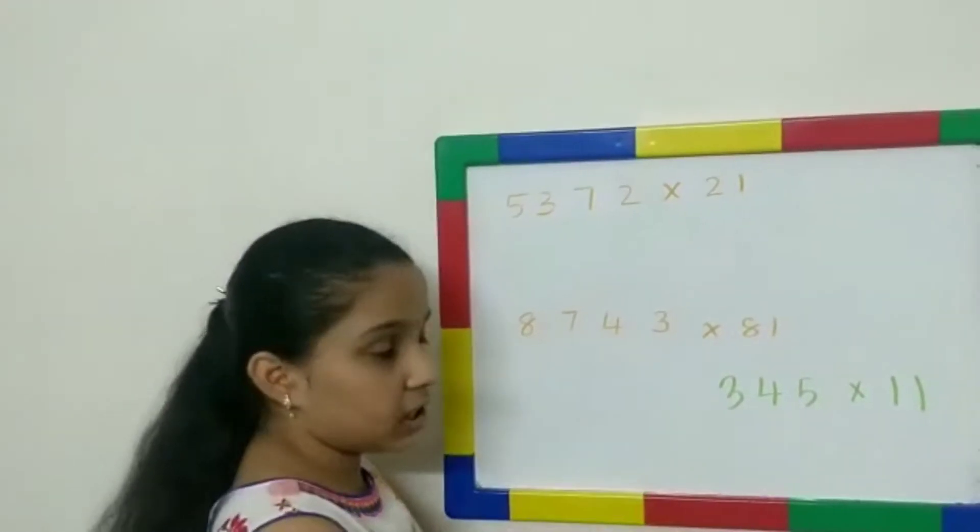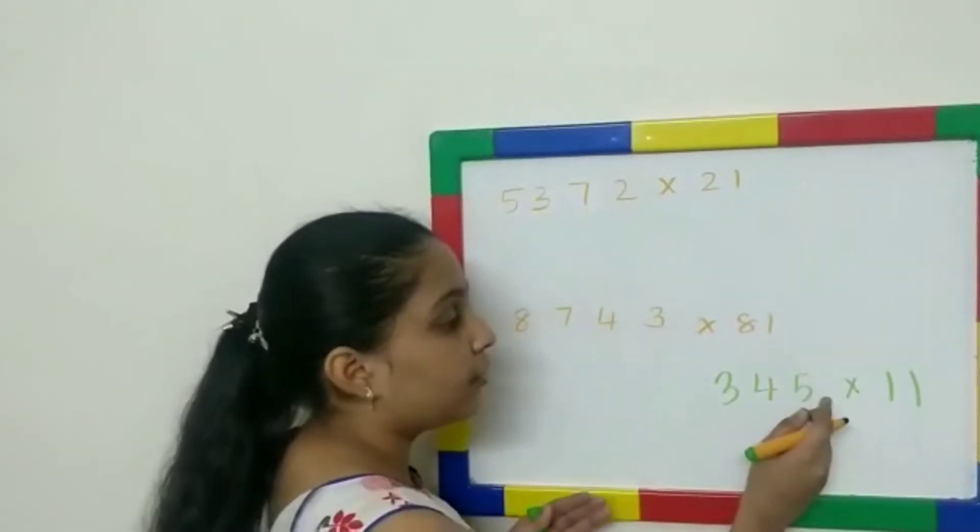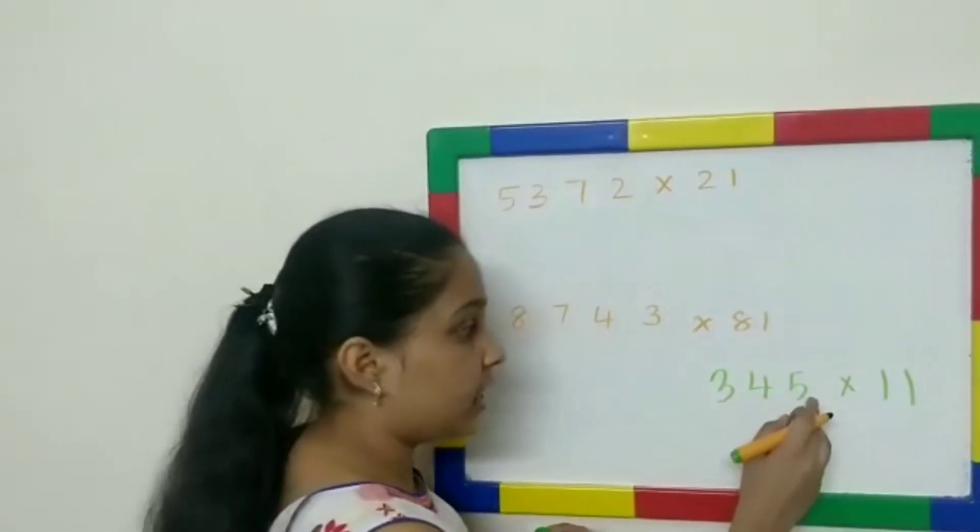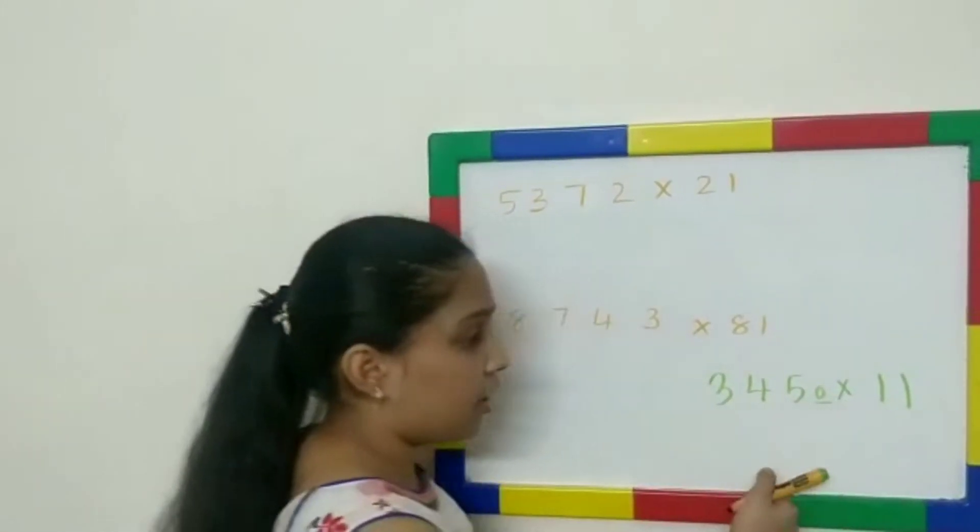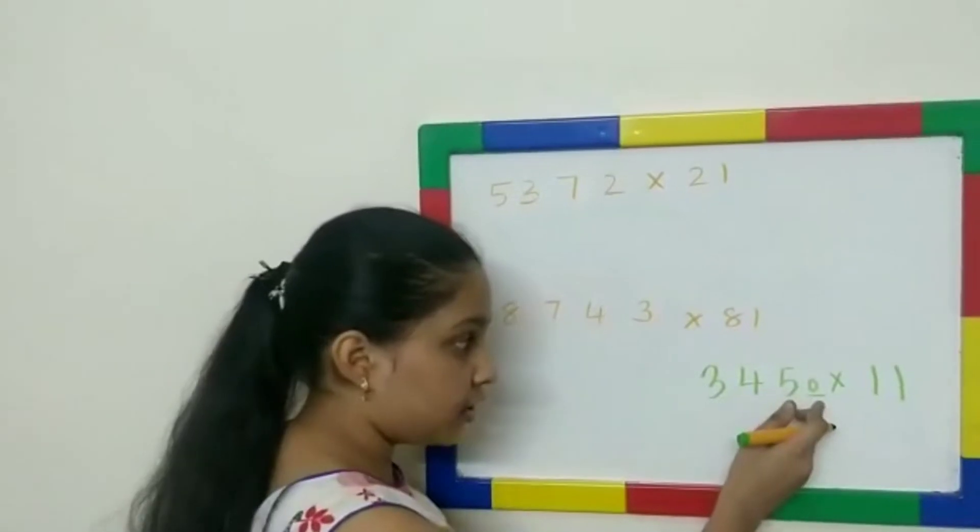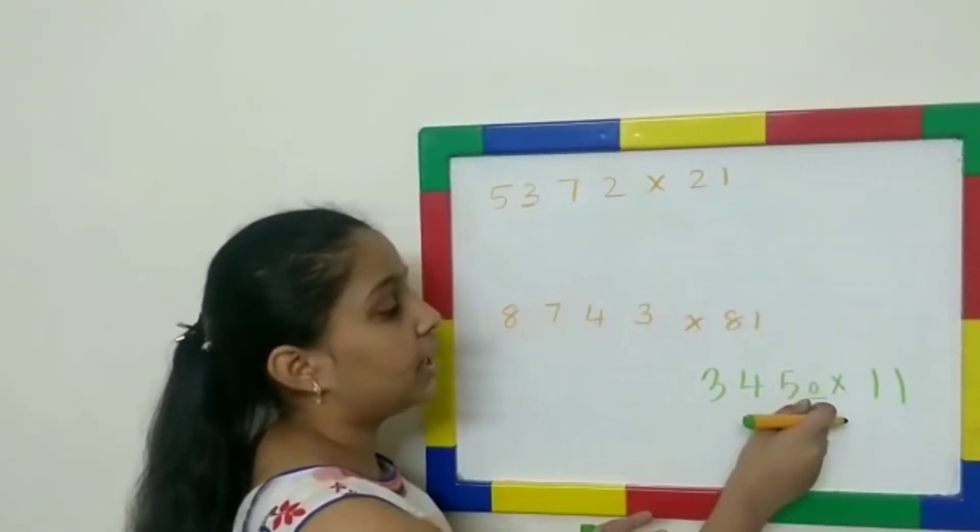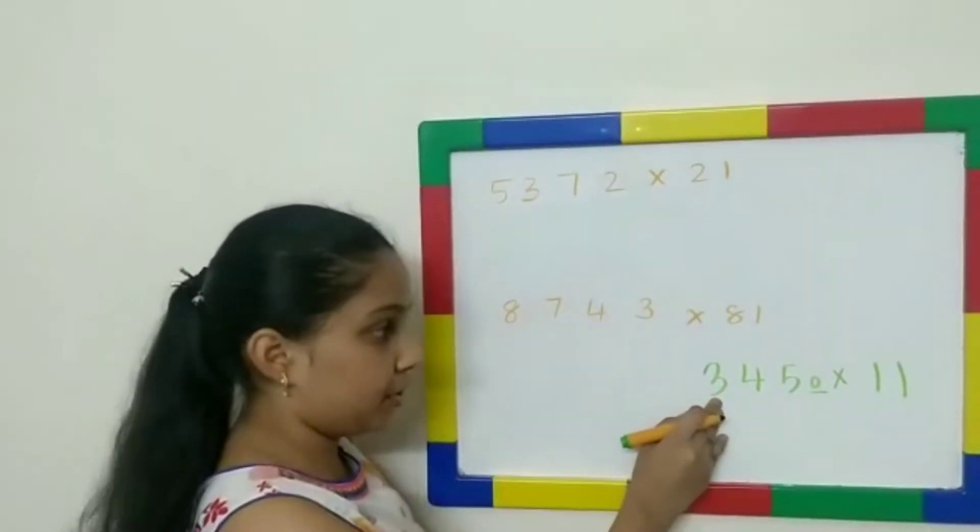So, first, before we start, we have to put a 0 in the end, that is next to 5. And you can underline or put a box on it, so that you know it does not merge with these numbers.